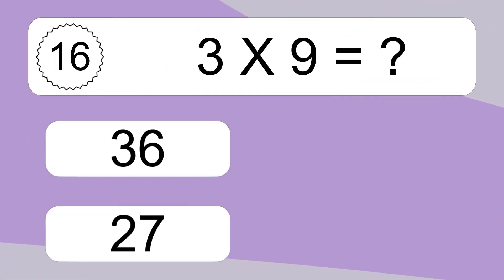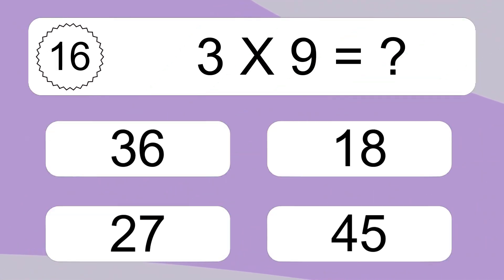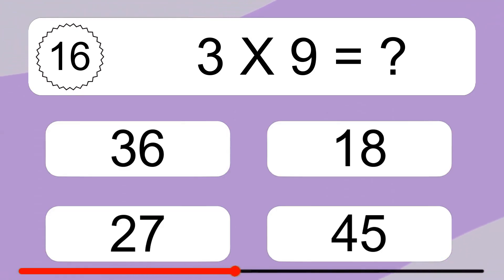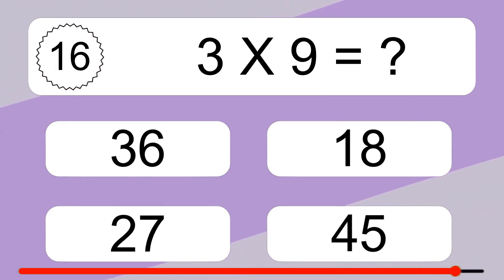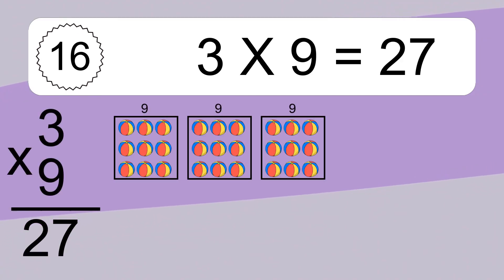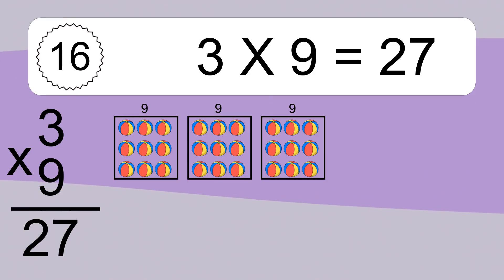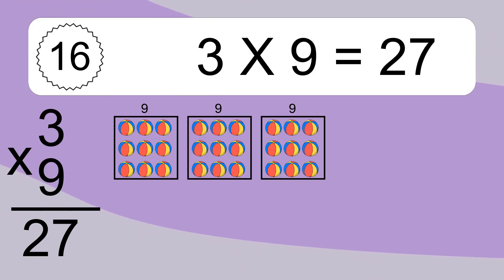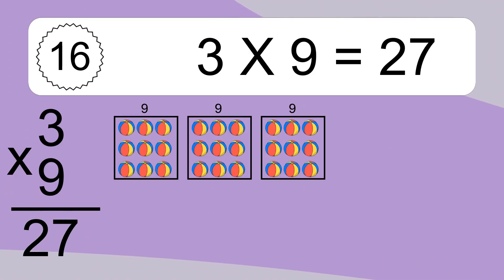3 times 9 equals what? We have 3 boxes, and each box has 9 colorful balls inside. If you count all the balls in all the boxes together, you will have 3 times 9 balls. This equals 27 balls.